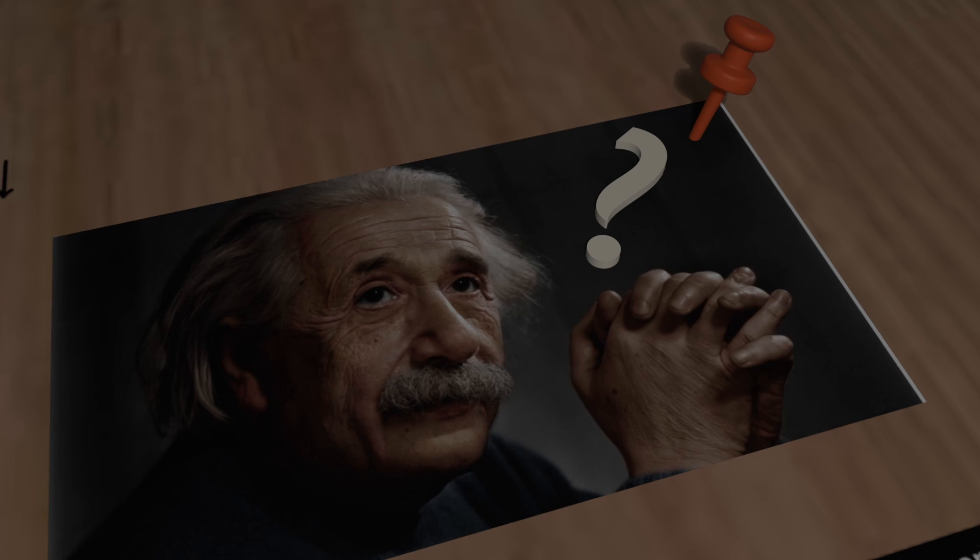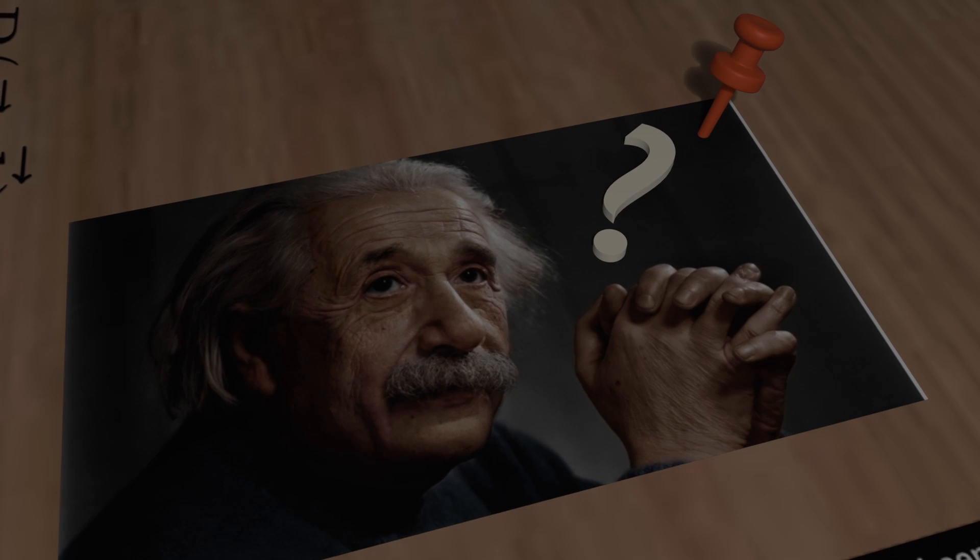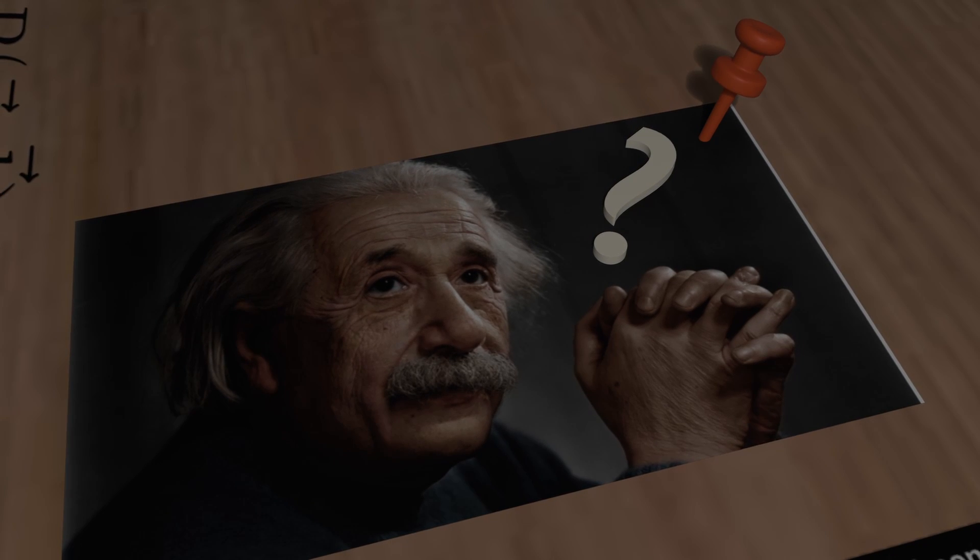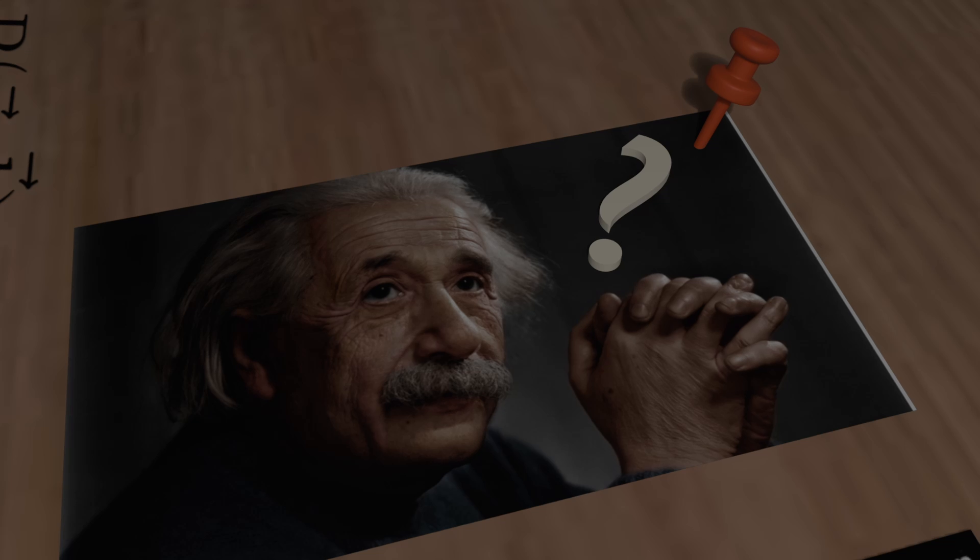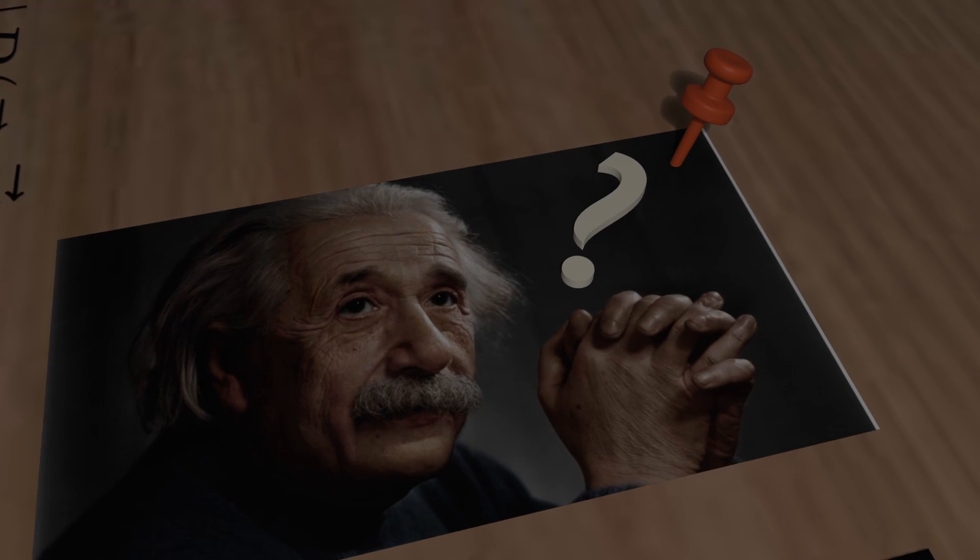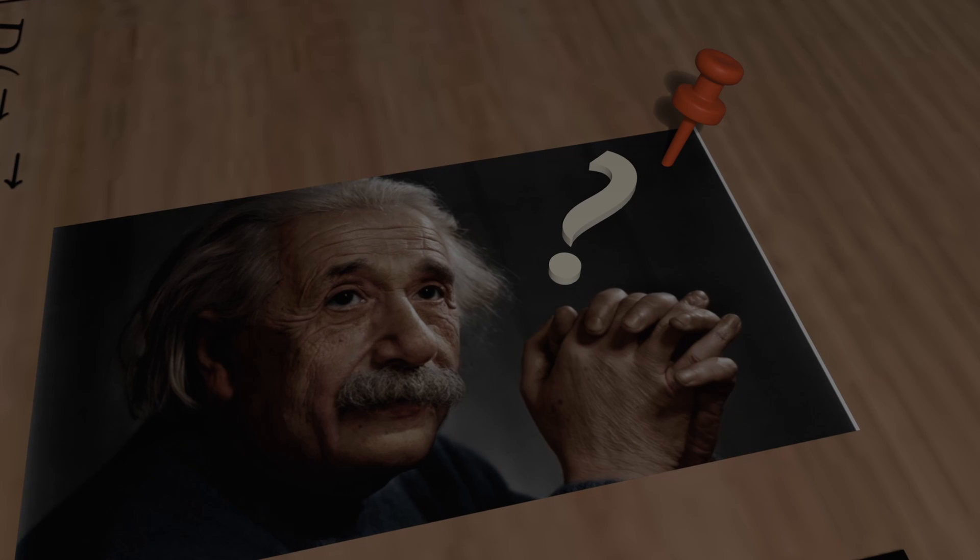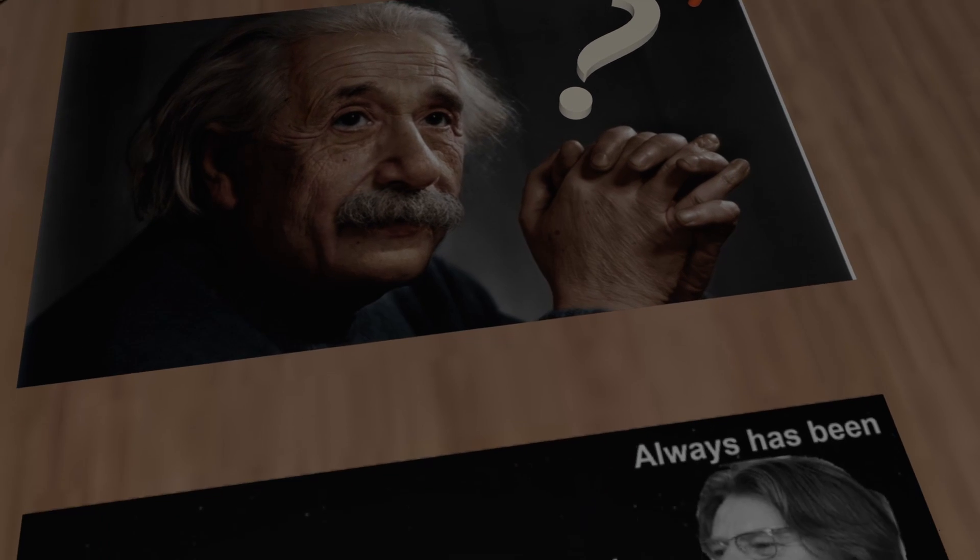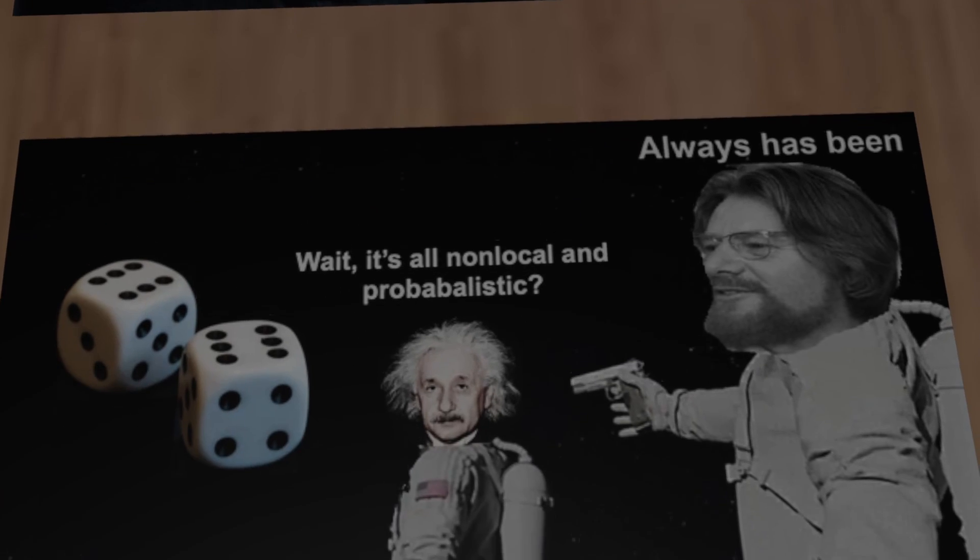This seemed impossible to Einstein, who couldn't accept that particles could influence each other instantly over vast distances. He called this spooky action at a distance because it violated the principle that information can't travel faster than light.